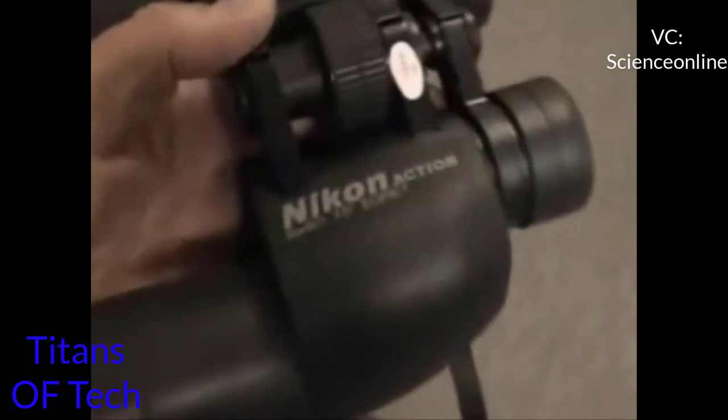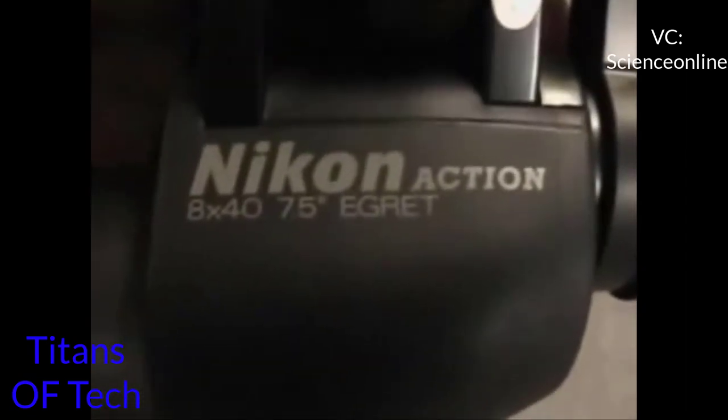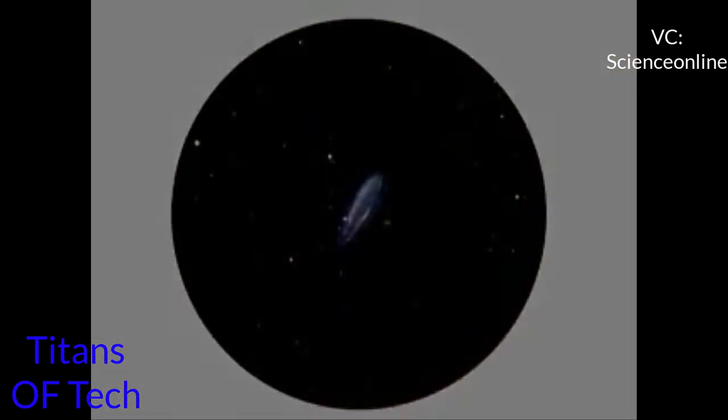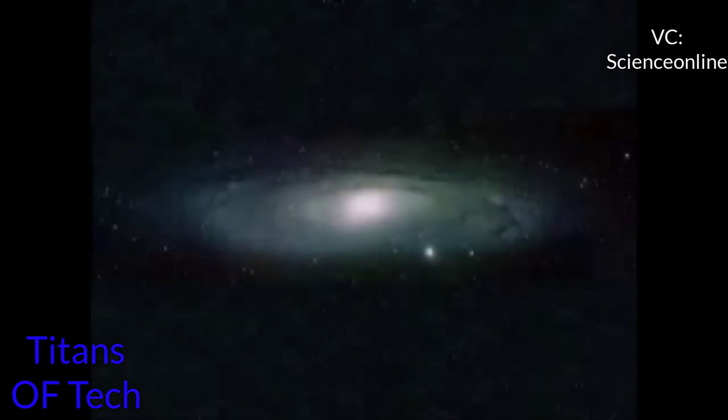I use 8 by 40 binoculars with a field of view of 7.5 degrees. This is the size that M31 appears in these binoculars. Viewed through a powerful telescope, it looks like this.